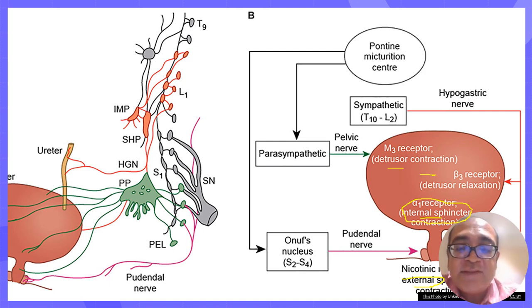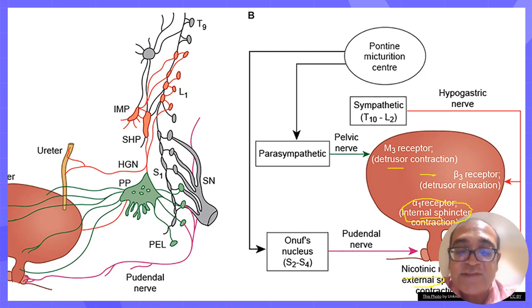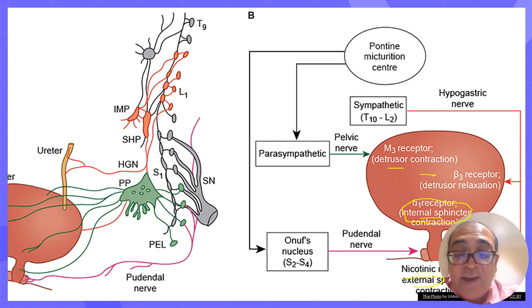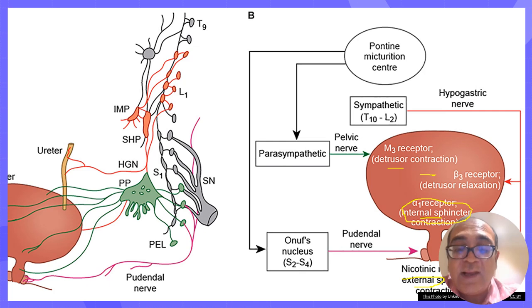To summarize the functional anatomy: the detrusor muscle is the main smooth muscle of the bladder that helps in bladder contraction, made up of gap junctions for communication between adjacent cells, functioning as a single unit. The internal bladder sphincter detects the degree of stretch; the external bladder sphincter is under voluntary control and is relaxed when one wants to empty the bladder. There is also a trigone on the posterior wall of the bladder.